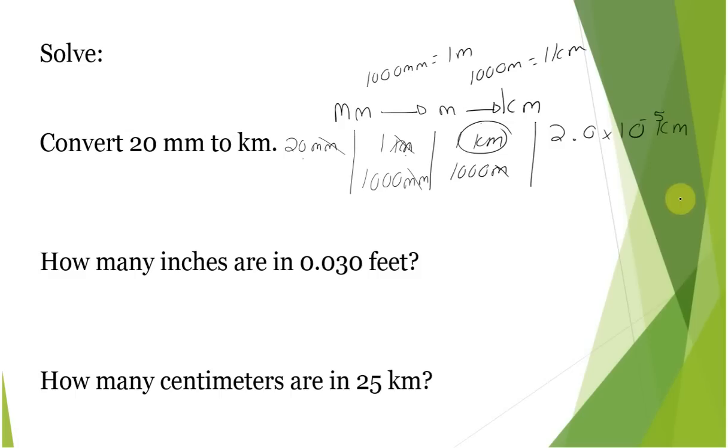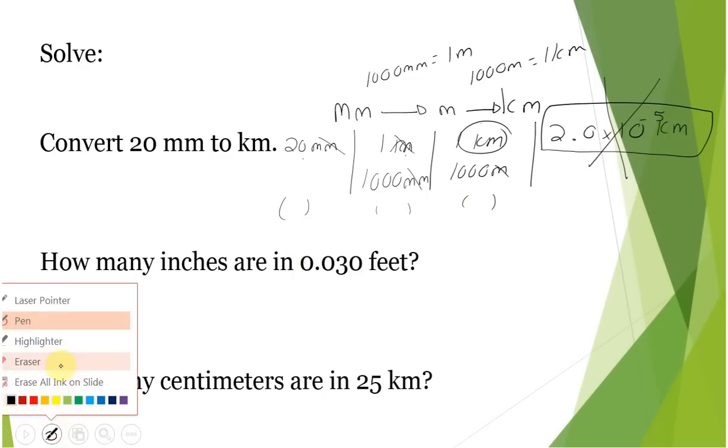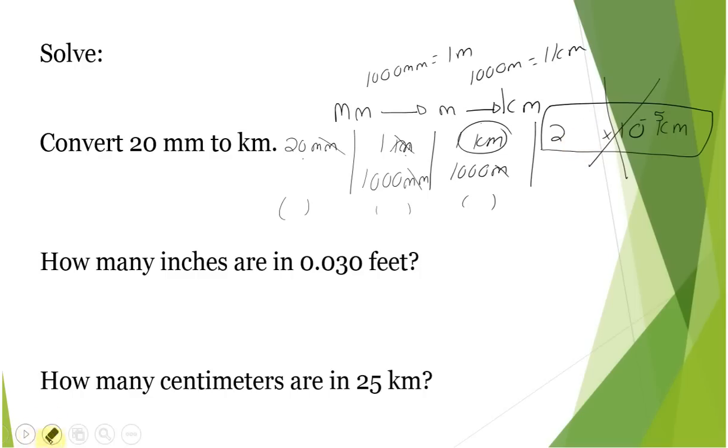When you are doing this type of problem, pay attention. Sig figs in 20. How many are there? There are just one. There's no decimal here, so it's one sig fig. This is exact, so there's an infinite number of sig figs. These are the same scale. So we know there's exactly a thousand millimeters in a meter. It's an infinite number of sig figs. So we only need one sig fig. So it's just 2 times 10 to the negative 5 kilometers.